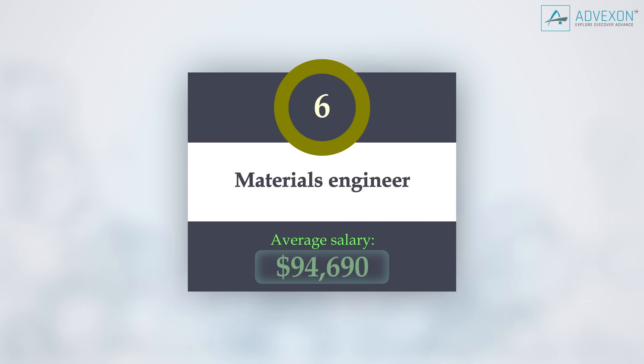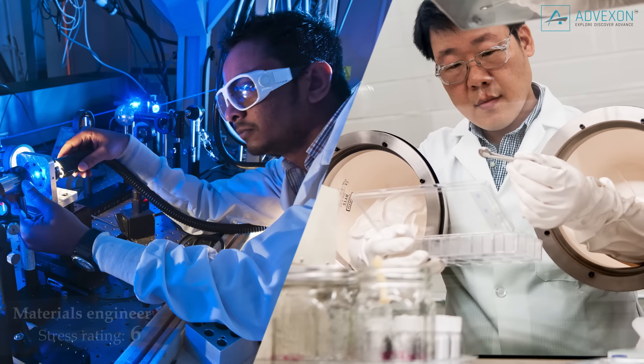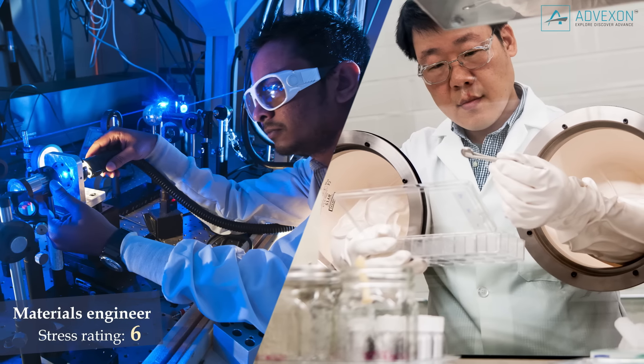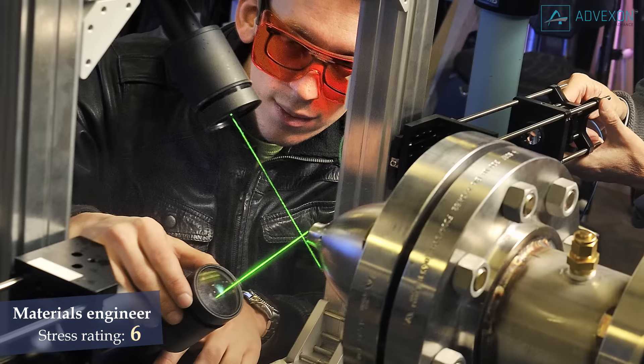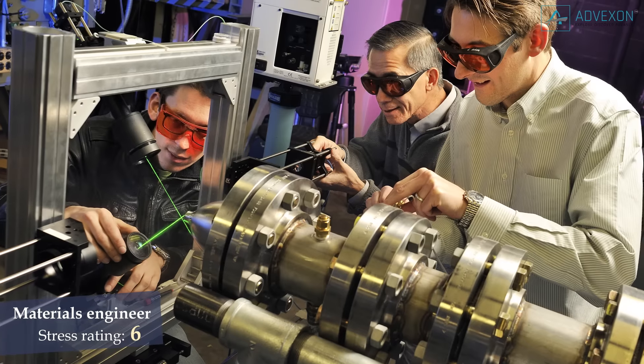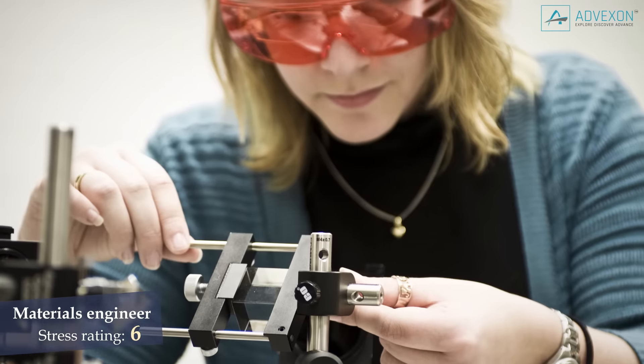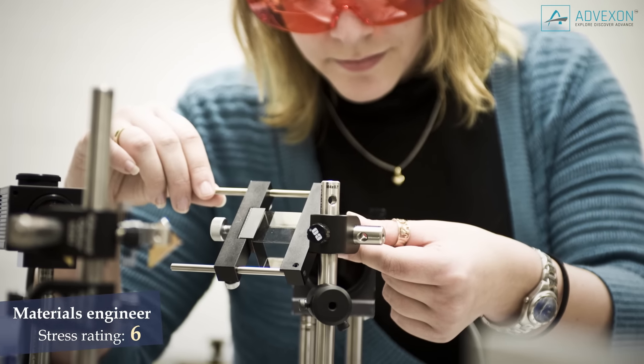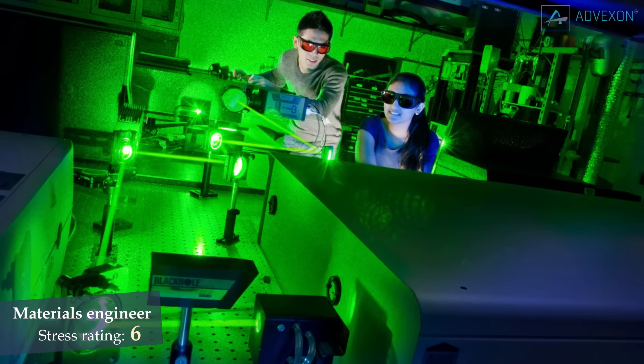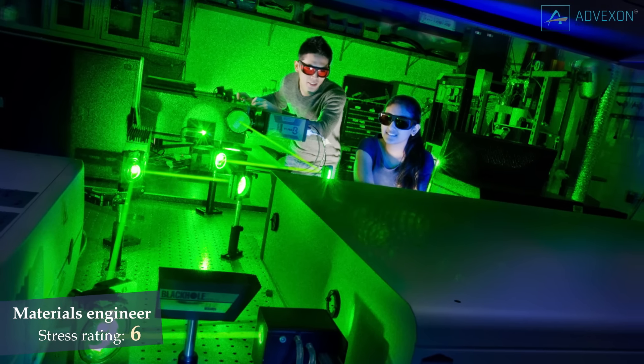Materials engineer. Stress rating 6, average salary $94,000. Material engineers evaluate and develop materials, machinery, and processes to manufacture materials for use in products that must meet specialized design and performance specifications. They require at least a bachelor's degree in material science or engineering or another related field.